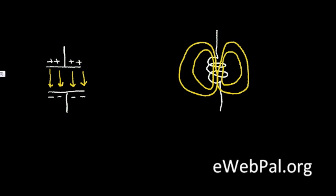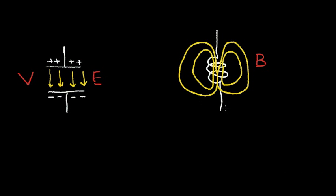Let's compare an inductor to a capacitor. We know that a capacitor stores energy in an electric field, which we'll call E. And we know that an inductor also stores energy, but in a magnetic field. To create this electric field in the capacitor, I must apply a voltage across the plates. But to create the energy field in the inductor, I don't apply voltage — instead, I run a current through the inductor, I.